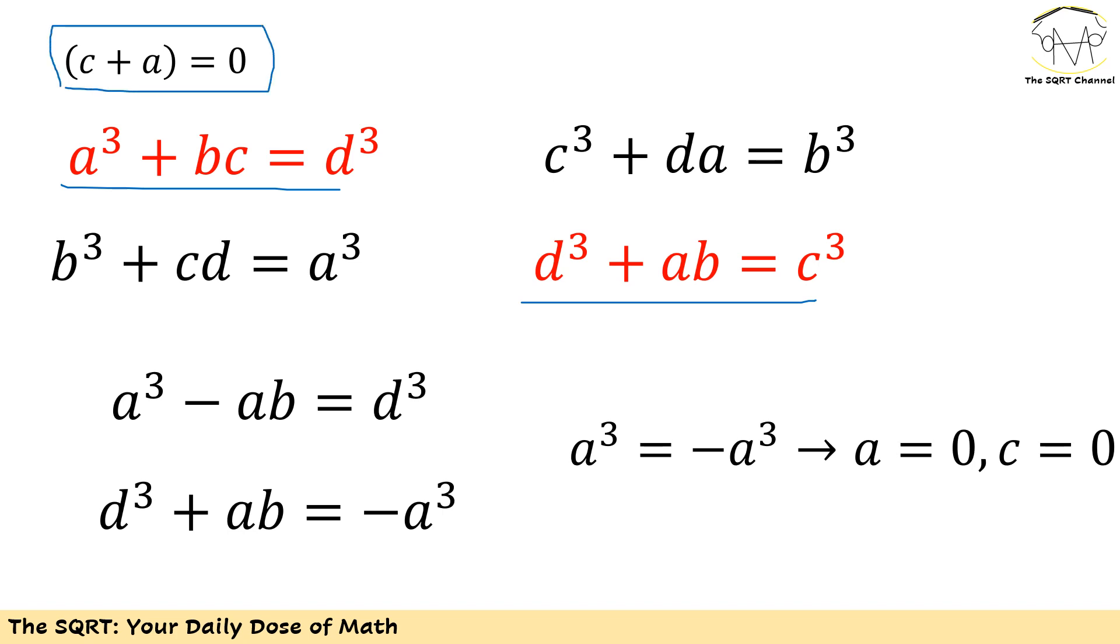From the first I can say a³ + bc = d³. But we found that c + a in one case is going to be zero, so I'm going to use -a for c.